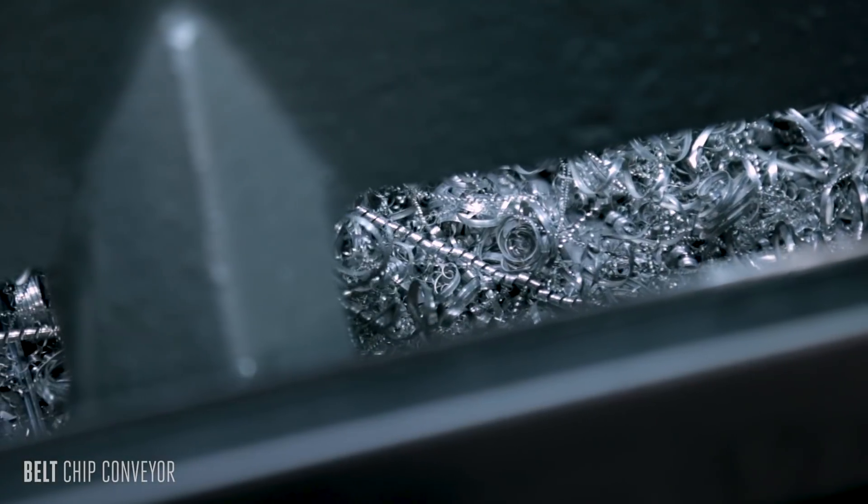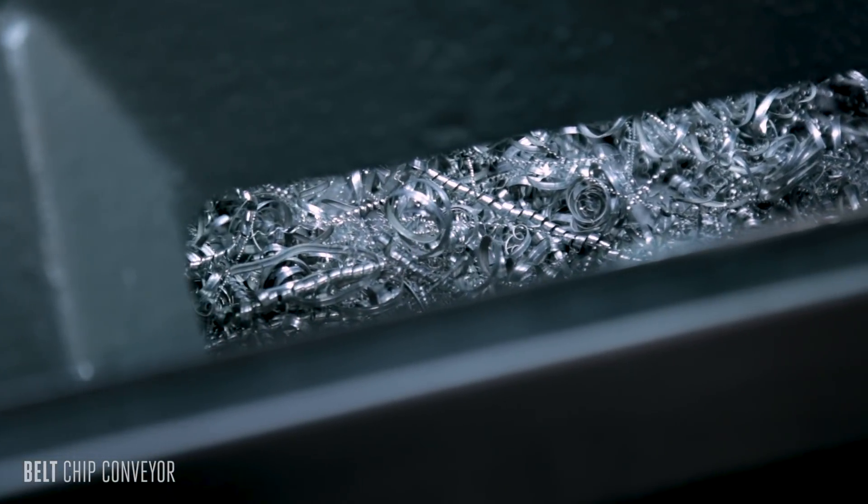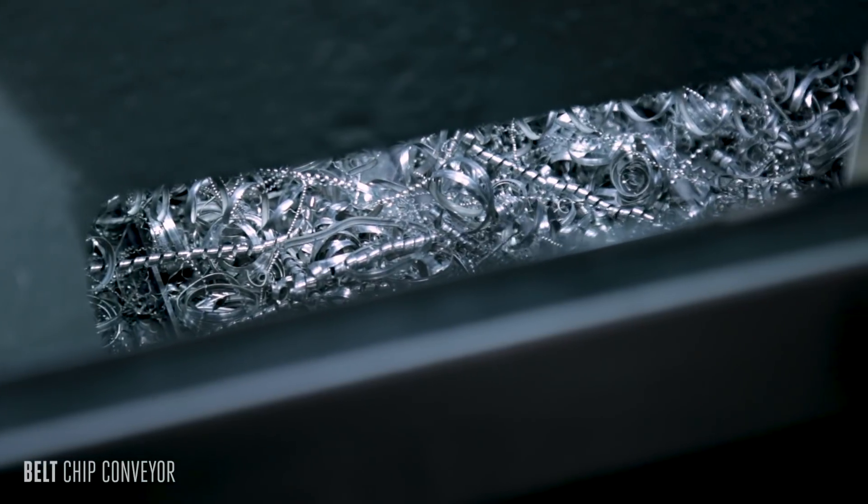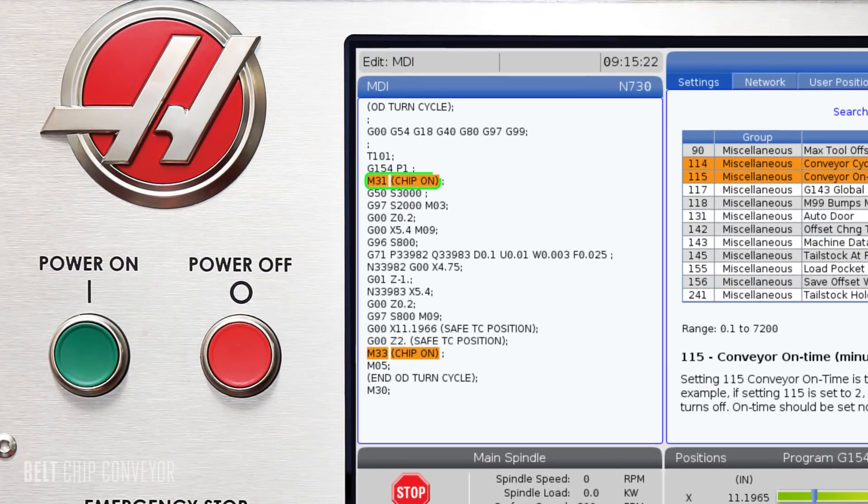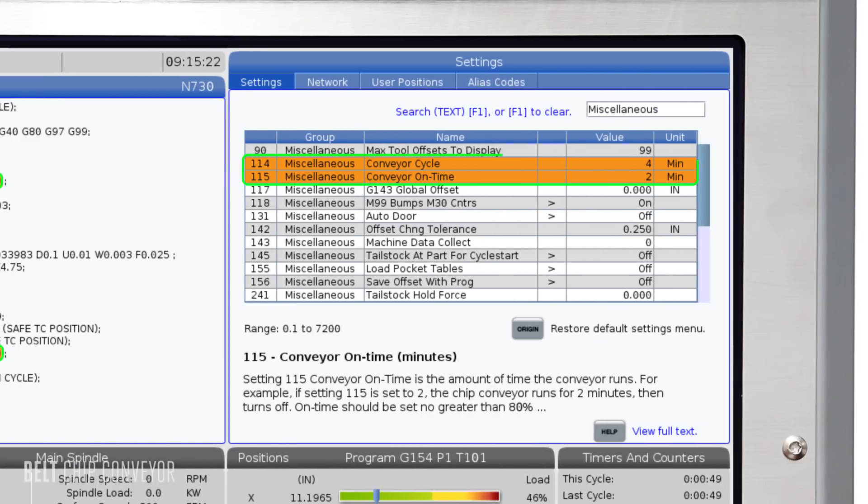The conveyor is powered directly by your machine. There's no need for additional wiring. Simple M codes control the conveyor, which means you can insert conveyor commands right into your programs, and the Haas control features easy-to-use settings to tell the conveyor when to run and for how long.